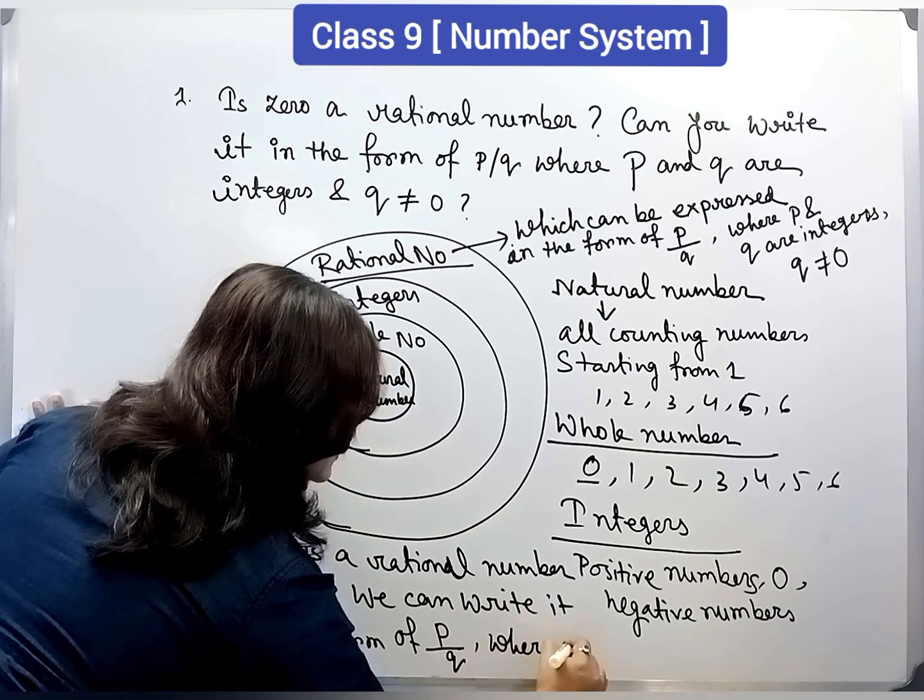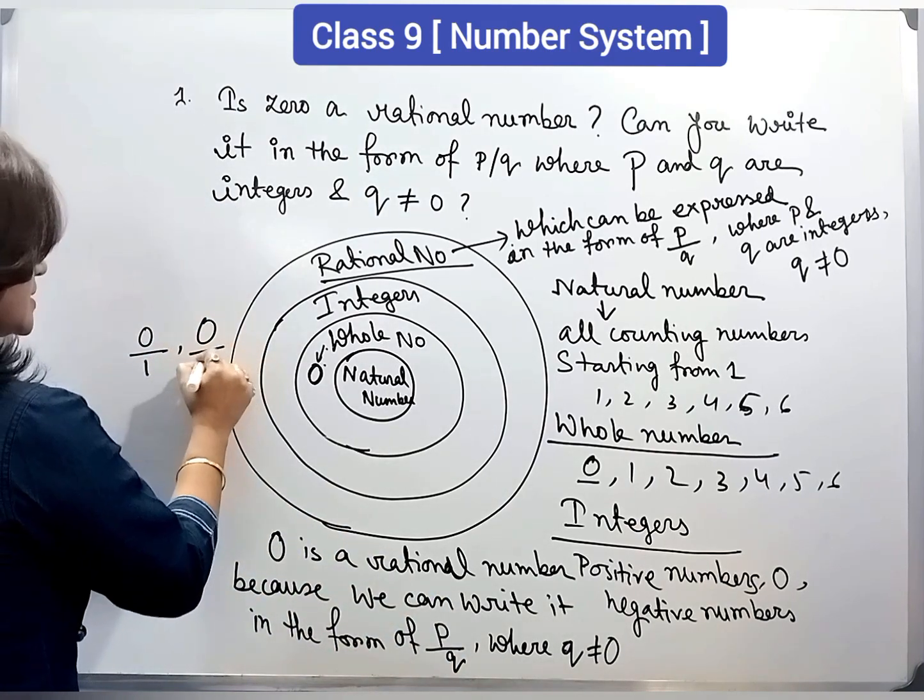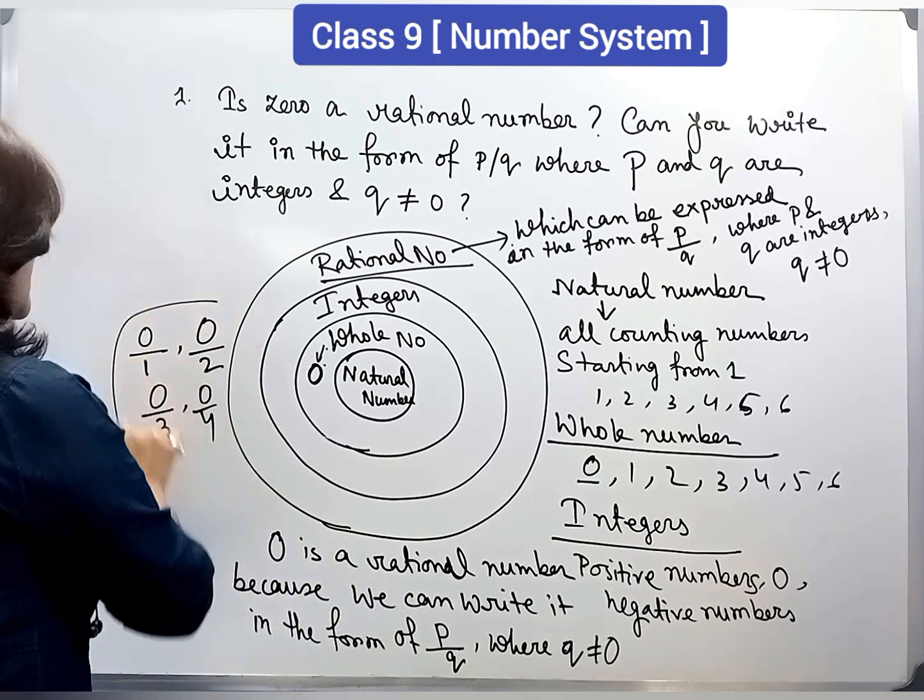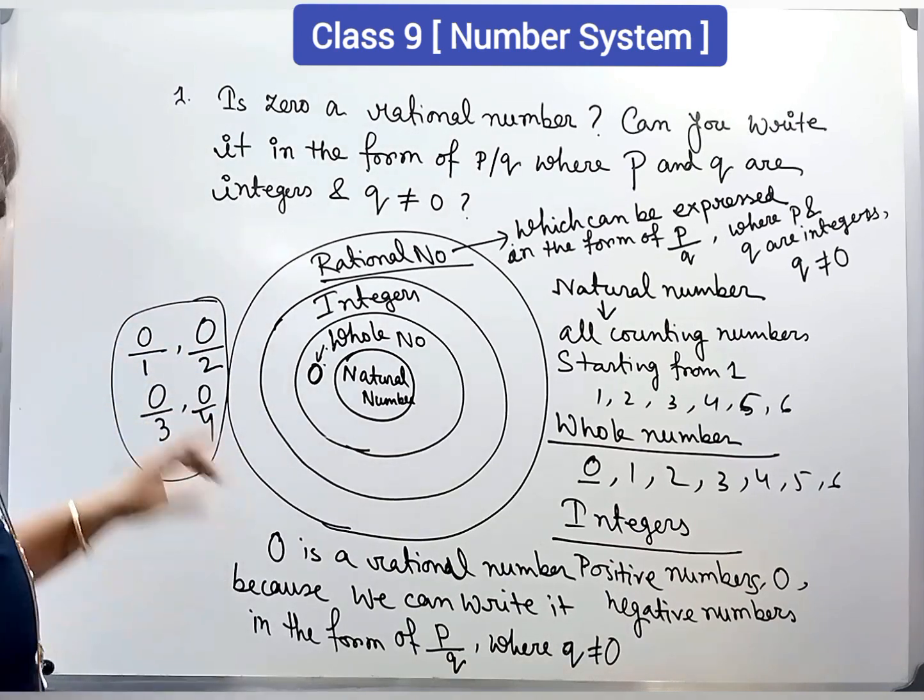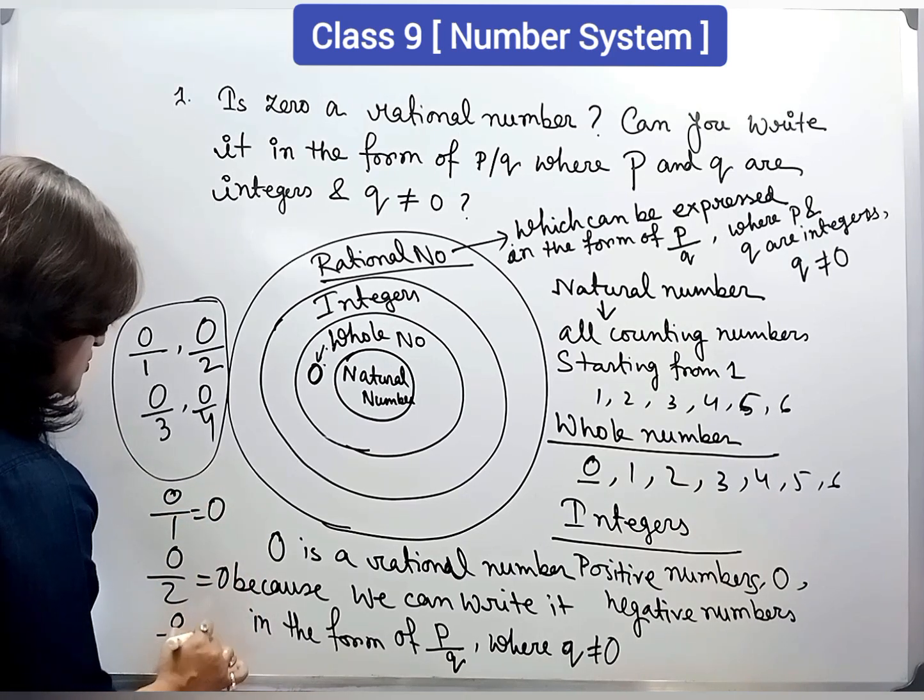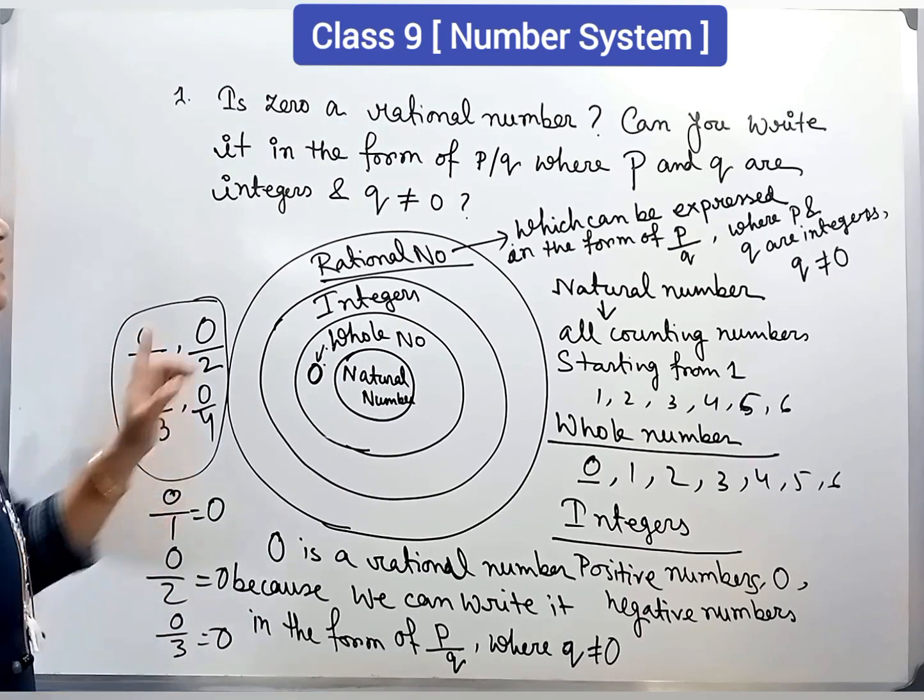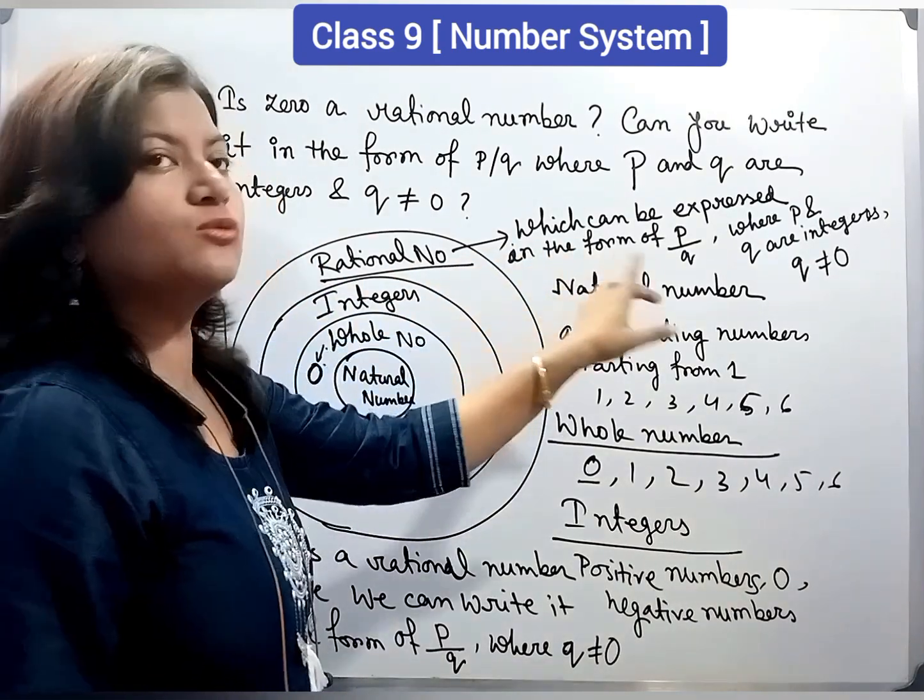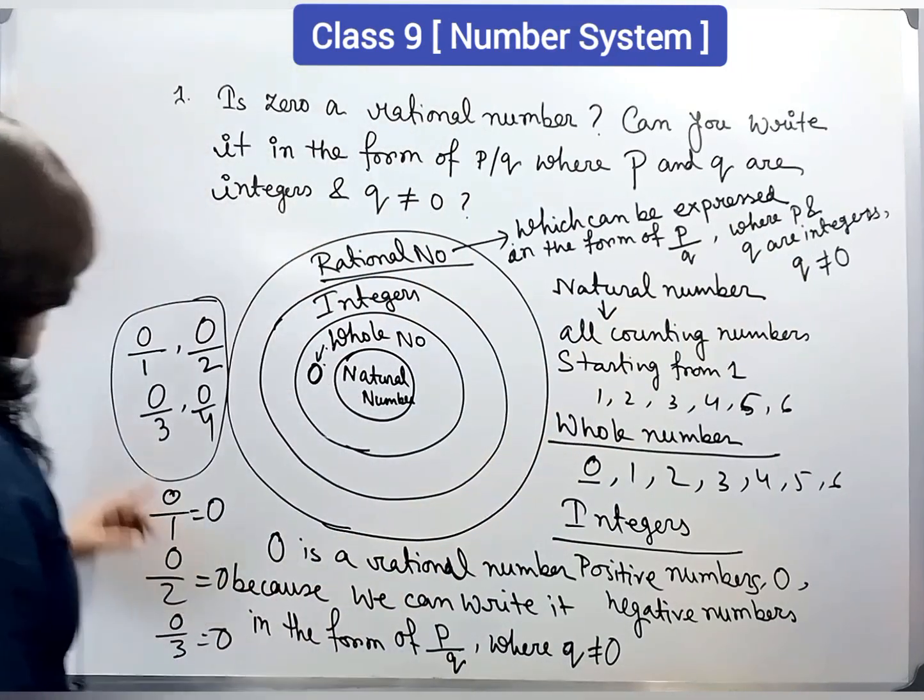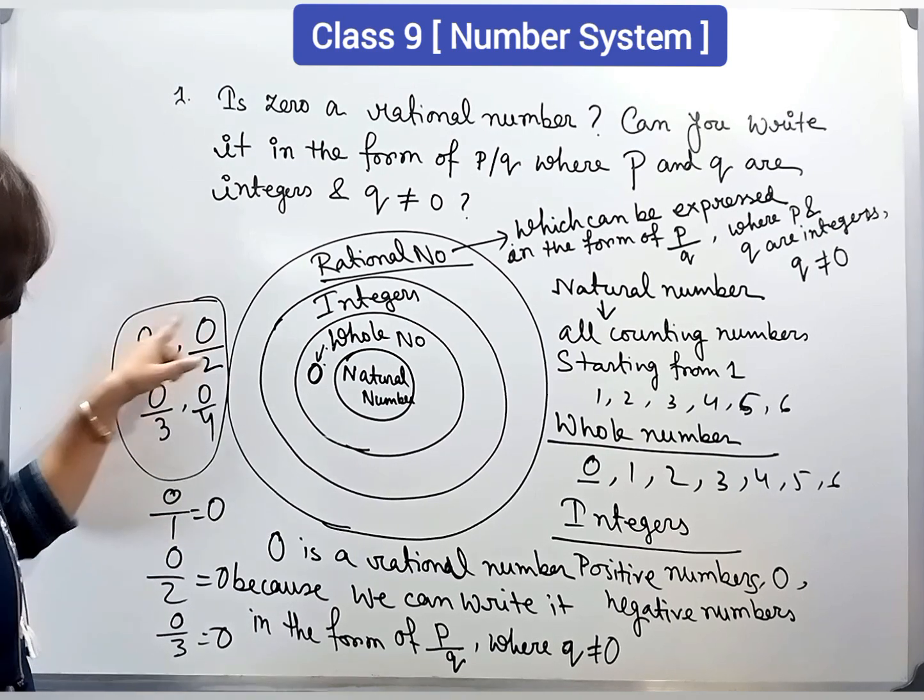Because, we can write it in the form of p by q, where q not equal to 0. We can write 0 as 0 by 1. We can write 0 as 0 by 2. We can write 0 as 0 by 3, 0 by 4. And all these values are 0. So, we can write 0 in p by q form. And p and q are integers. 0 is also an integer, 1 is also an integer. And last point, q not equal to 0. In all of these four examples, q is not equal to 0.